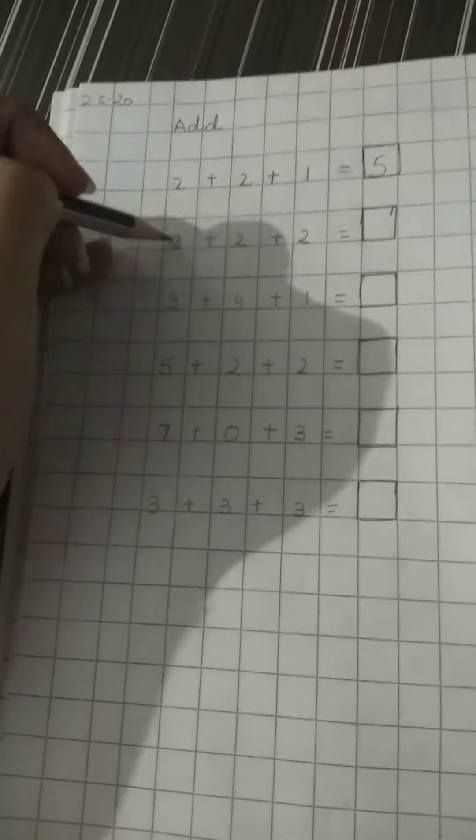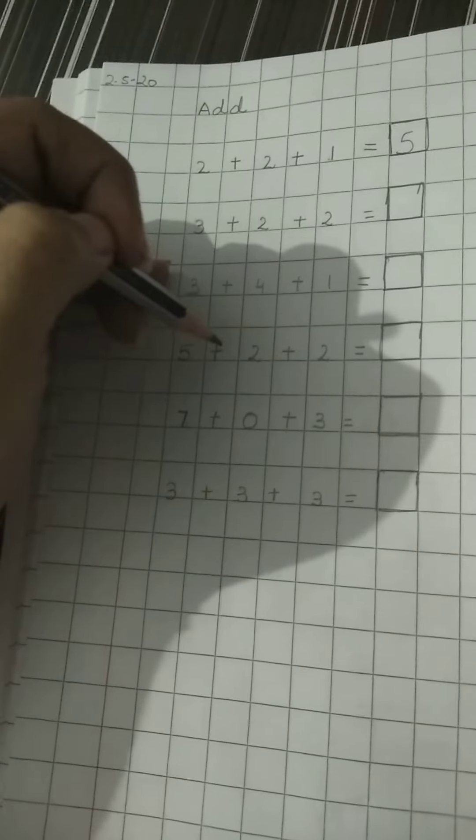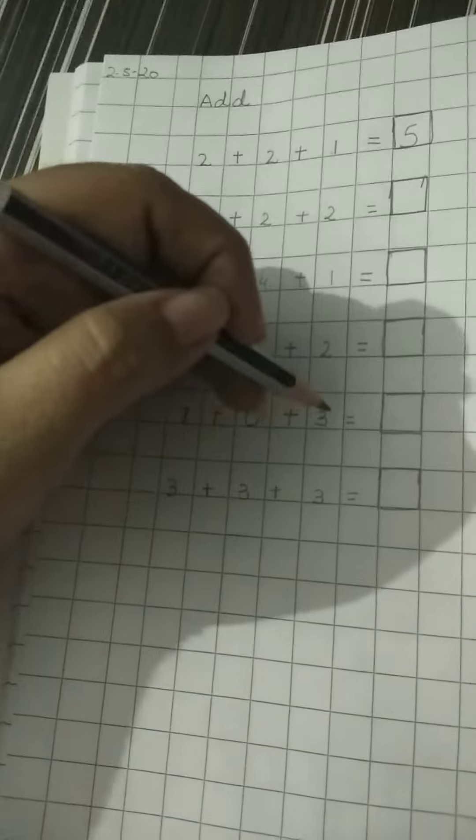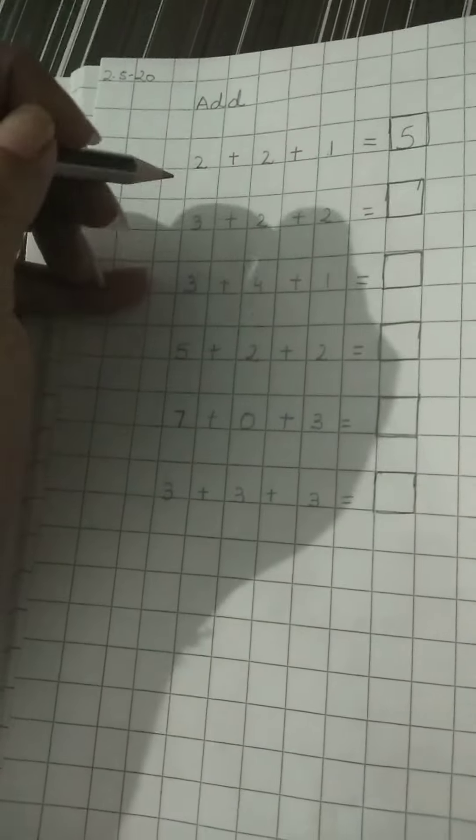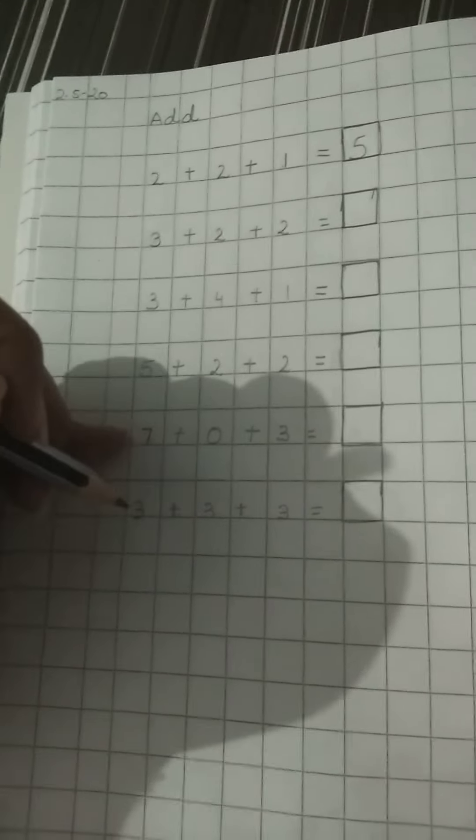In the same manner, 3 plus 2 plus 2, 3 plus 4 plus 1, 5 plus 2 plus 2, 7 plus 0 plus 3, 3 plus 3 plus 3. You all have to do these sums by your own. Thank you.